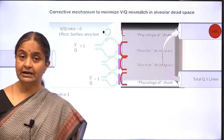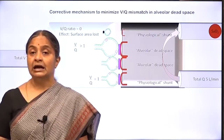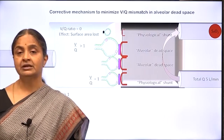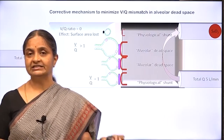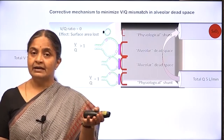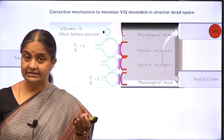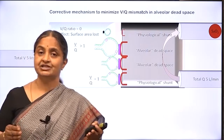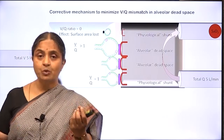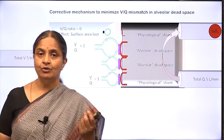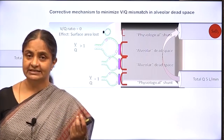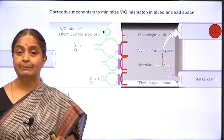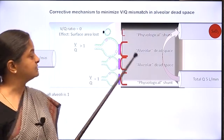There are two concepts to understand about hypoxic vasoconstriction. First, hypoxic vasoconstriction occurs in the pulmonary circulation only. In the systemic circulation, if there is hypoxia — say in an exercising muscle where capillaries have less oxygen because the muscle has absorbed it — hypoxia in a systemic capillary leads to vasodilation, because the tissues require more oxygen. In contrast, hypoxia in pulmonary capillaries leads to vasoconstriction. Hypoxic vasoconstriction is a peculiar phenomenon in pulmonary capillaries only.